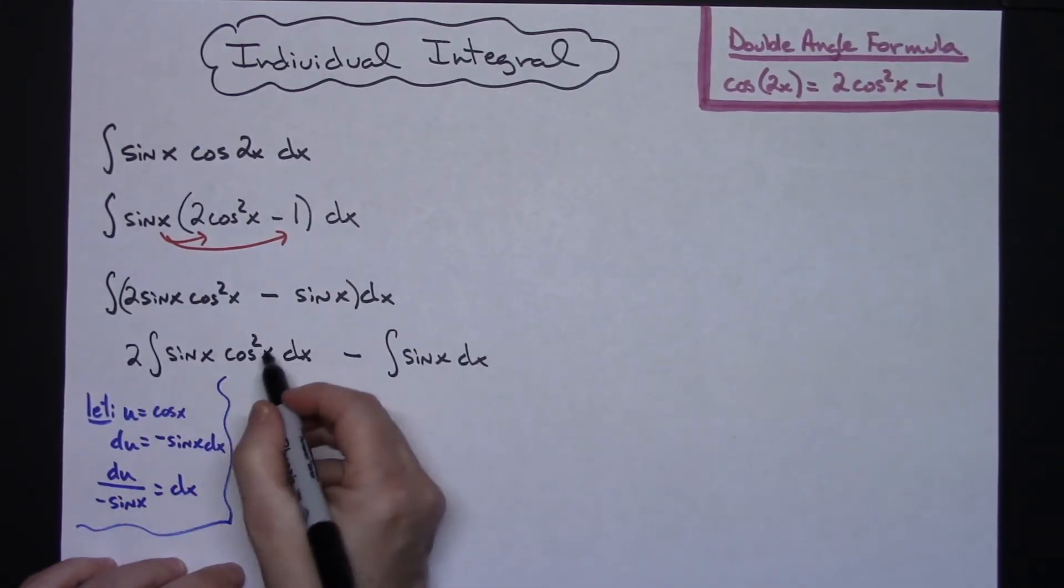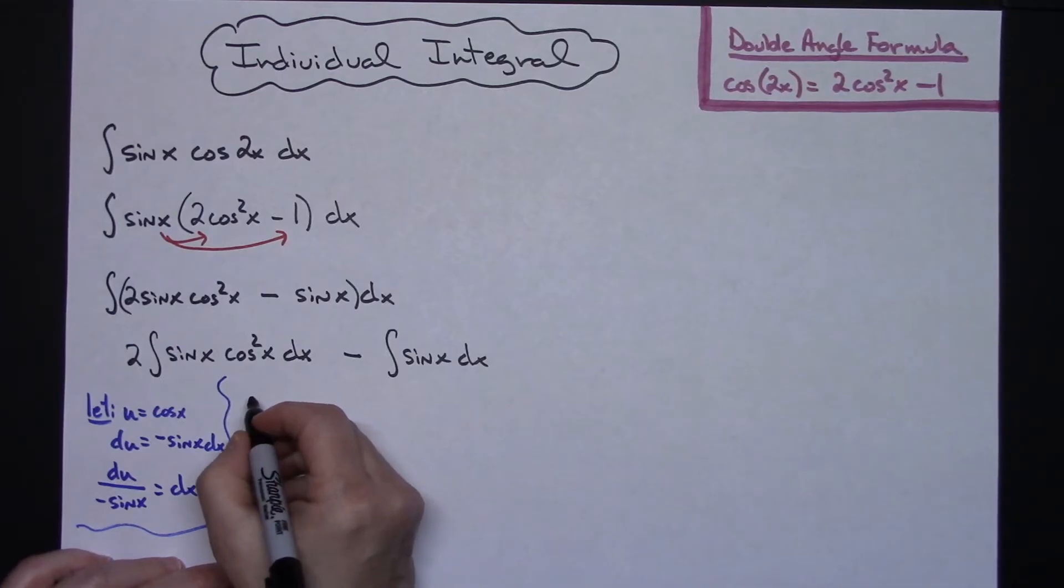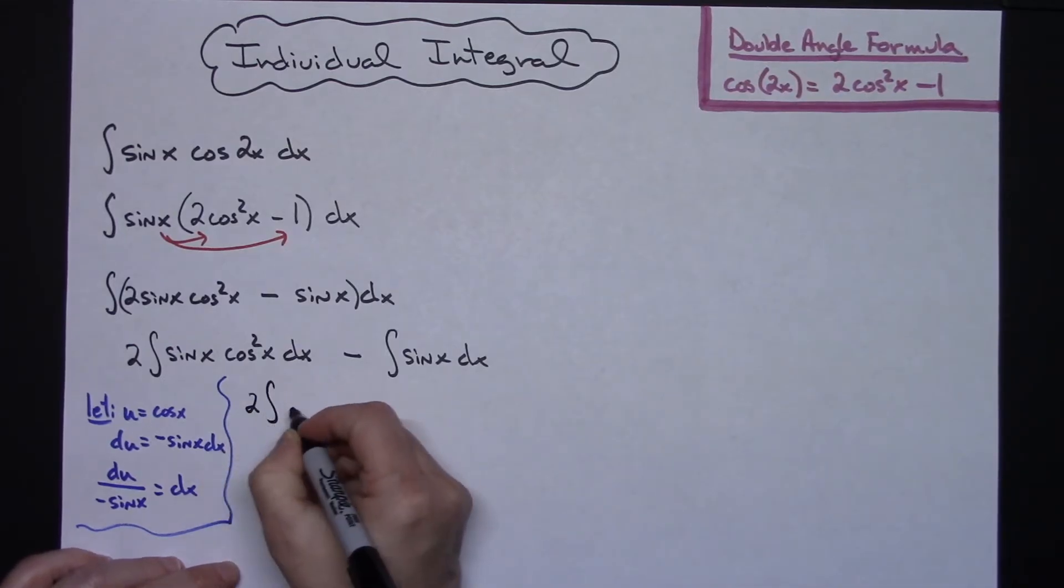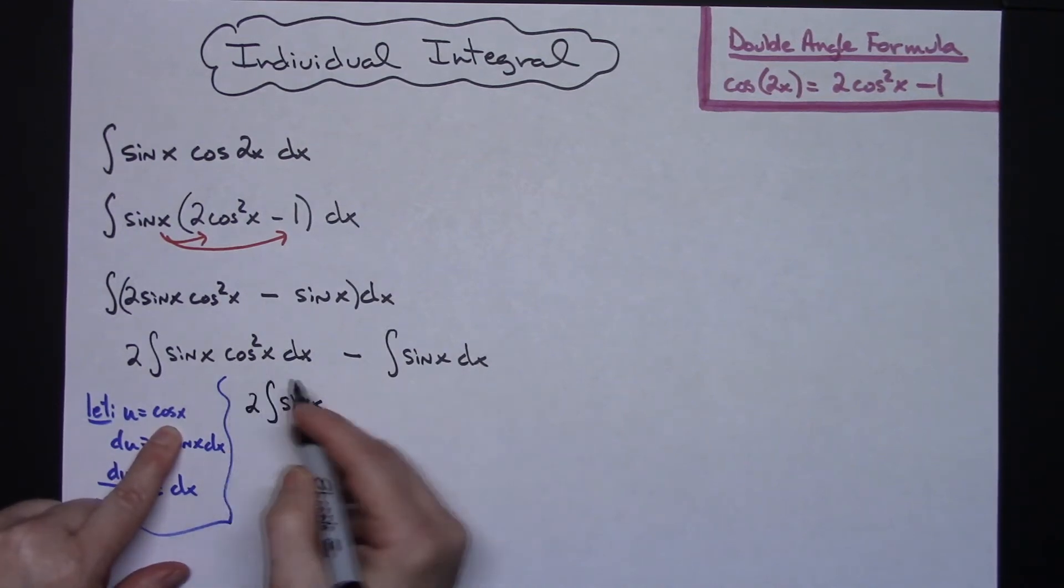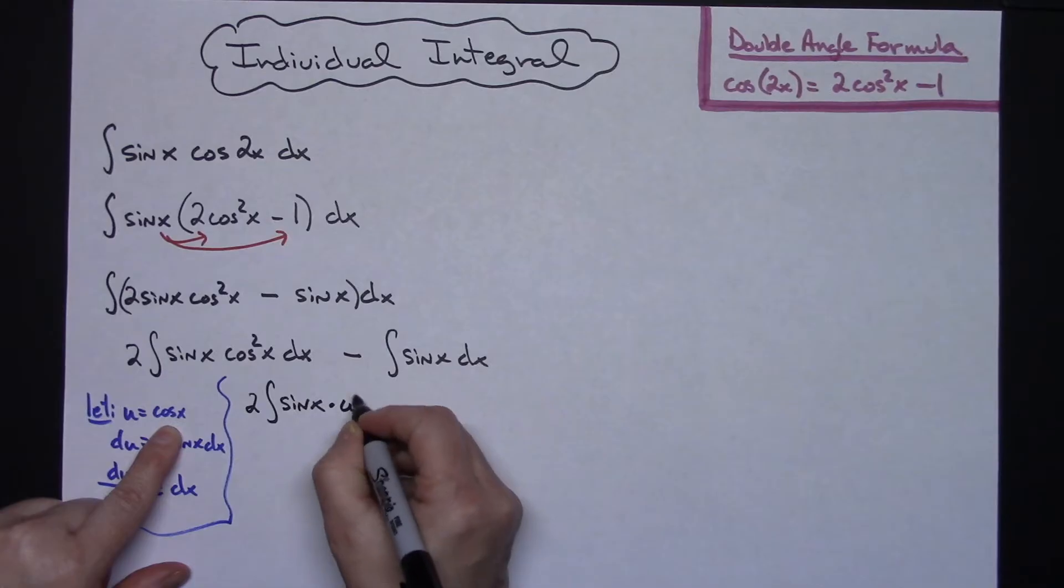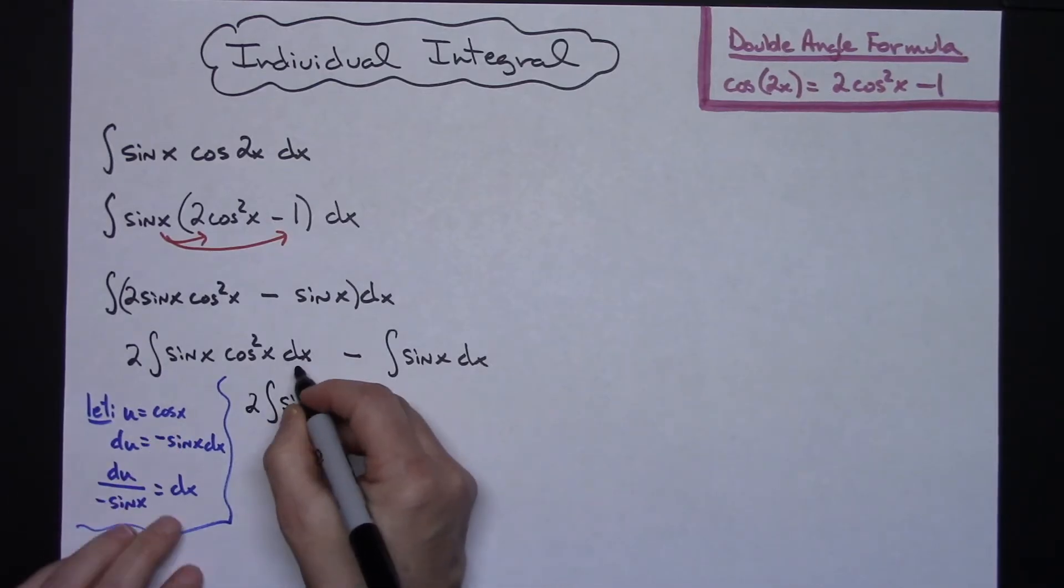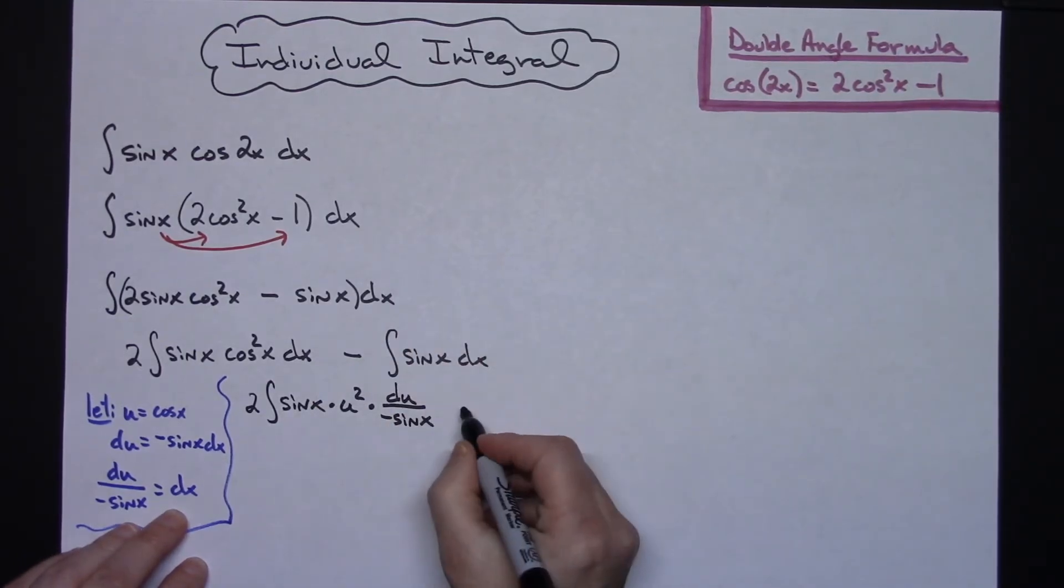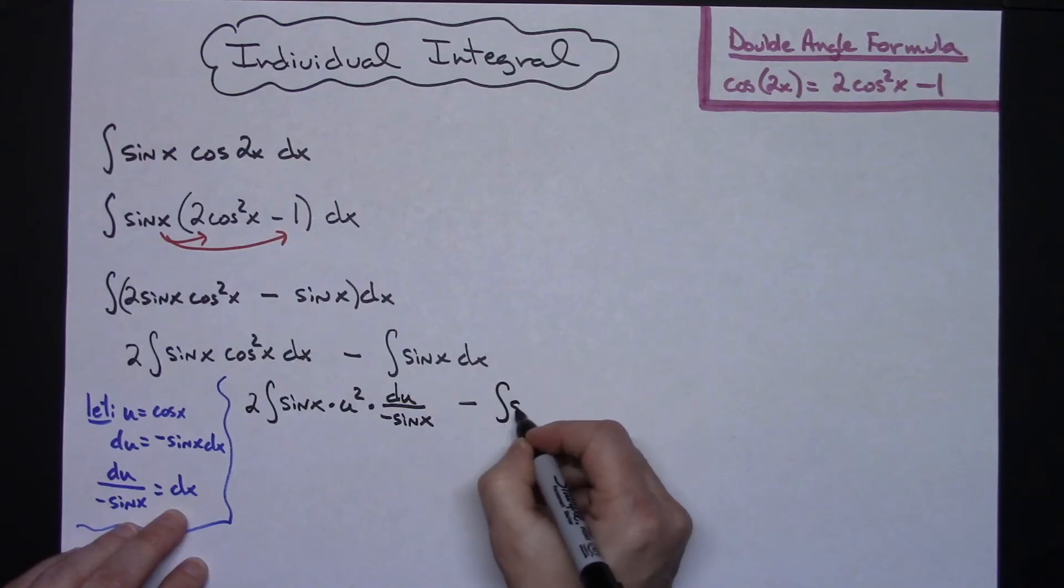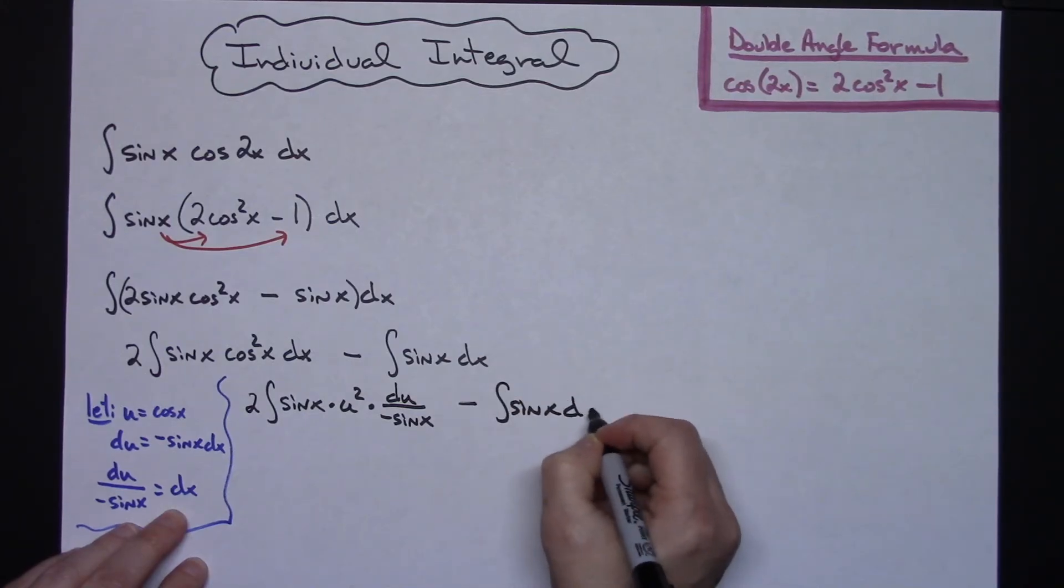So doing this left hand side here, let's have the 2 integral sine x. Now since I let u be cosine x I'm going to have times u squared right there. Replacing that dx I'll have du over negative sine x. Finishing that out I'll have minus the integral of sine x dx.